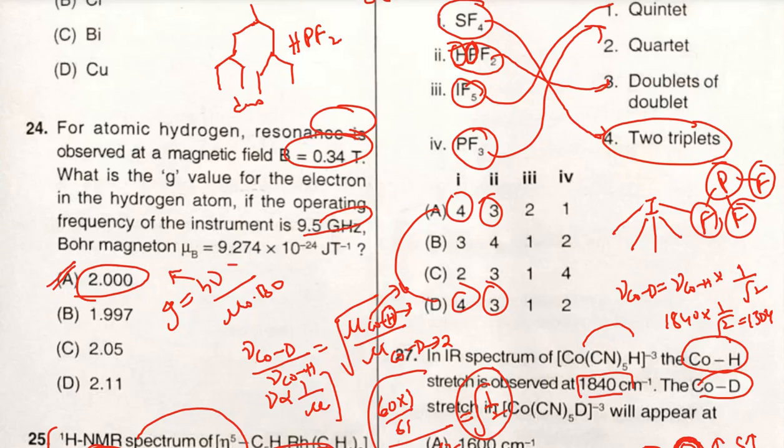How to calculate? We have the equation: g = 2hν/(μ₀B₀). Here h is Planck's constant, ν is frequency - 9.5 gigahertz. One gigahertz equals 10⁹ hertz, so 9.5 × 10⁹ hertz. μ₀ is Bohr magneton, the value is given: 9.274 × 10⁻²⁴ joule per tesla. B₀ is magnetic field strength, the value is 0.34 tesla. Just substitute all the values and we will get the answer 2.0003, so option A is the correct answer.